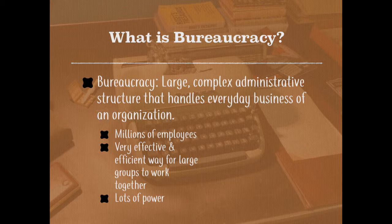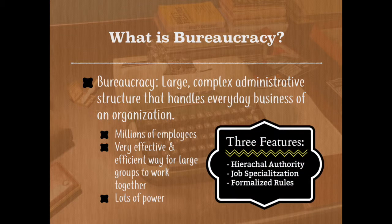By definition, a bureaucracy is a system of organization built on three principles: hierarchical authority, job specialization, and formalized rules. The word hierarchical describes any organization structured as a pyramid with a chain of command running from the top down to its base. Each bureaucrat has certain defined duties and responsibilities. The bureaucracy does its work according to established regulations and procedures, set out in written form so they can be known by all involved.